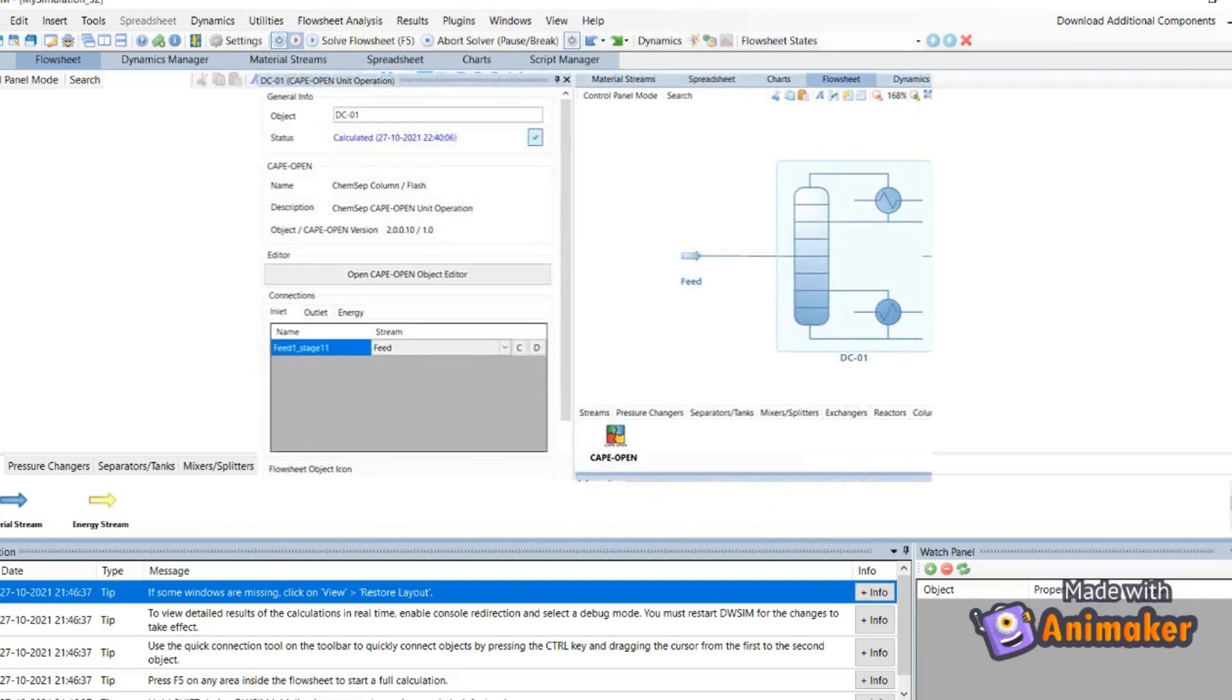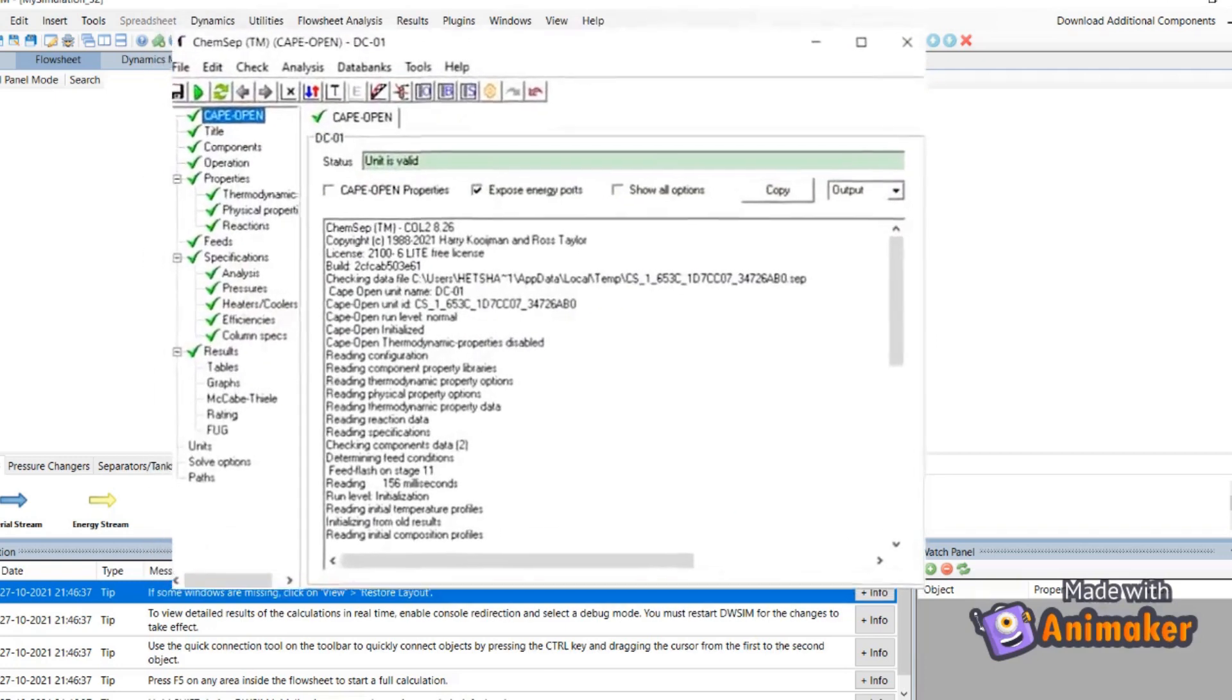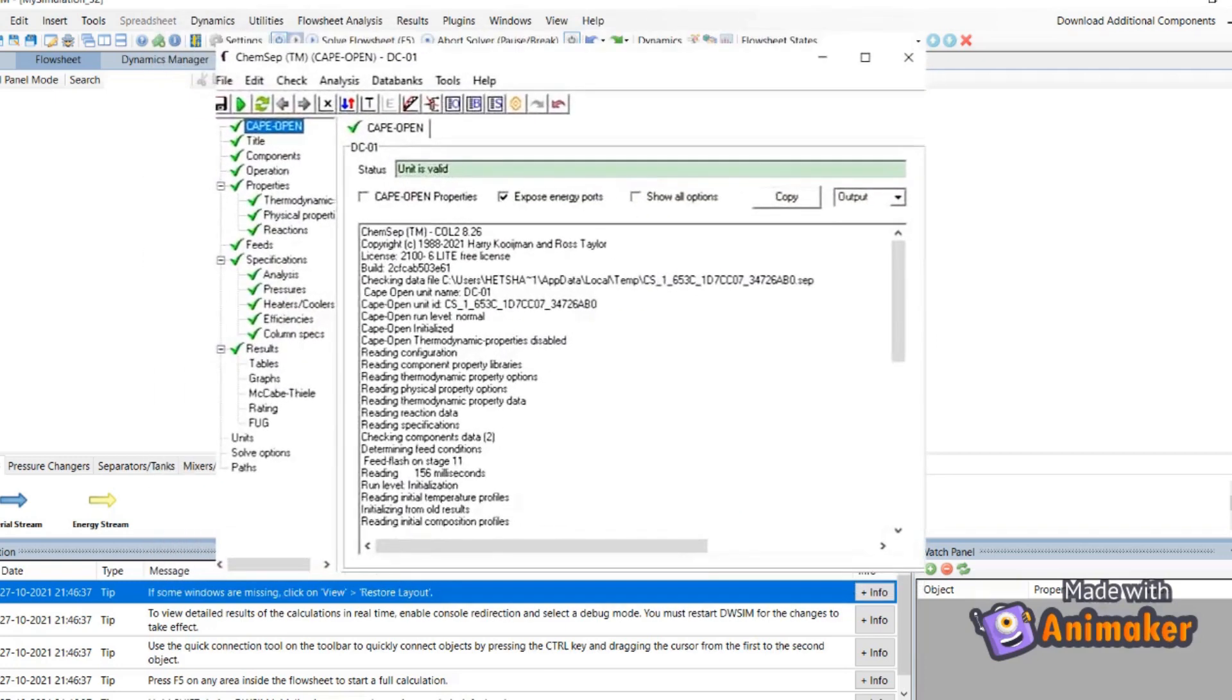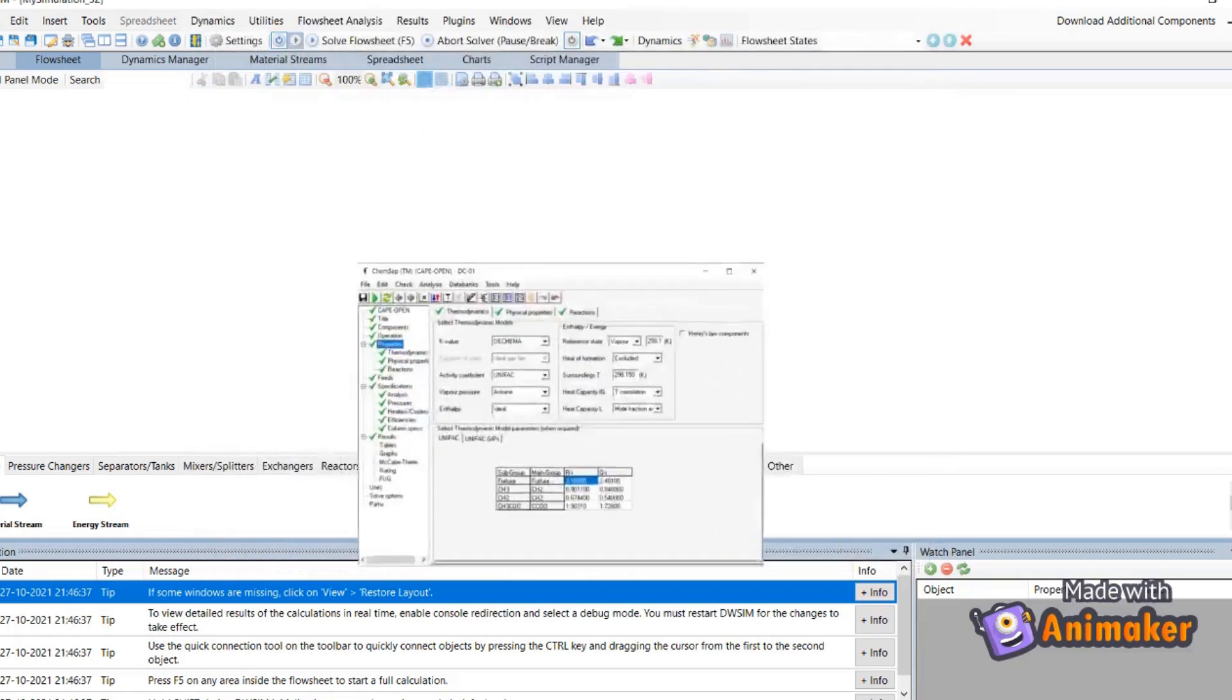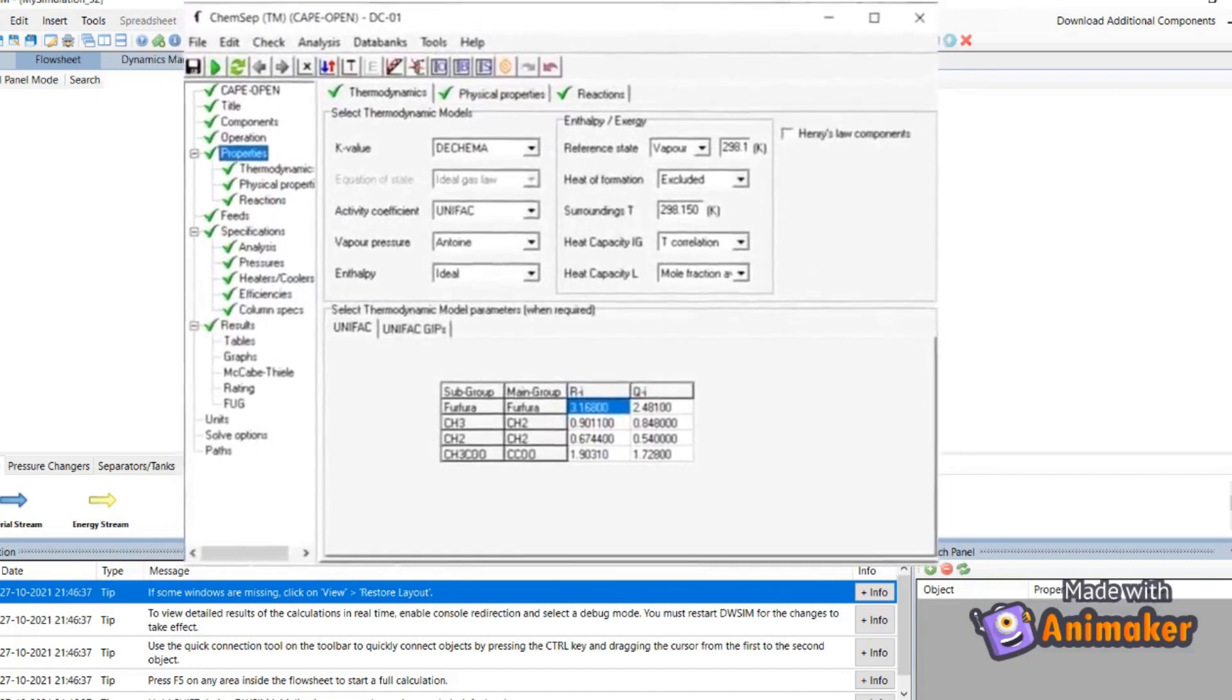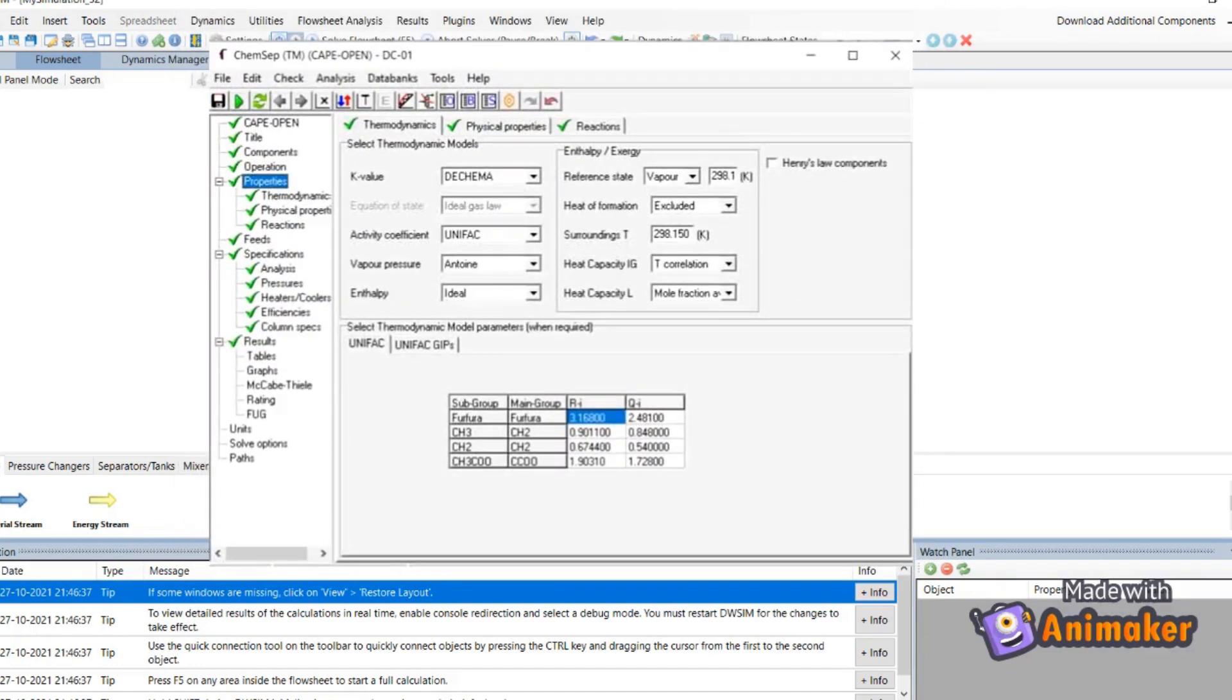Let us now introduce CAPE-OPEN using the CAPE-OPEN tab. First, join the appropriate connection in CAPE-OPEN. Now, click the CAPE-OPEN editor button and a new window will appear. In this section, we first select energy mode after the specified number of stages and feed stages. Let us move on to the thermodynamics section. In this section, first choose DECAMA for K value, UNIFAC for activity coefficient, Antoine for the vapor pressure and ideal for enthalpy.